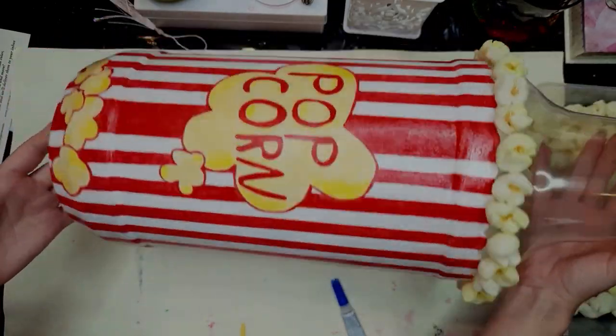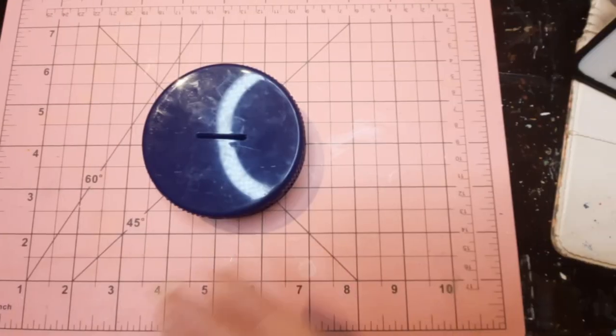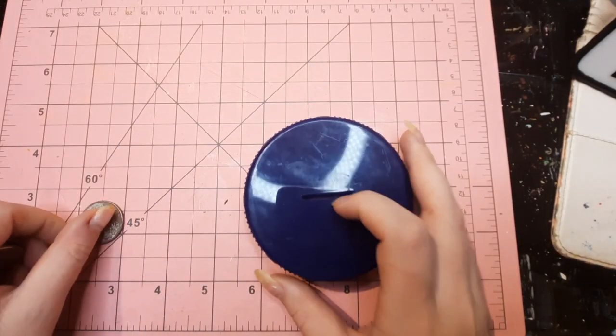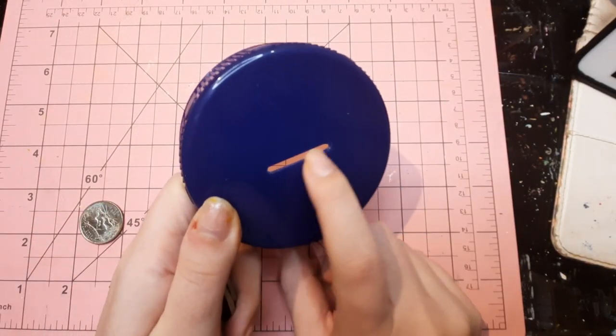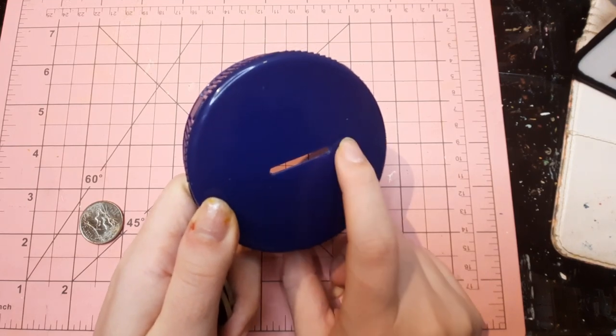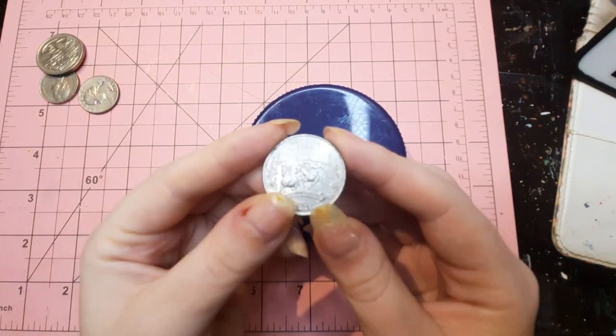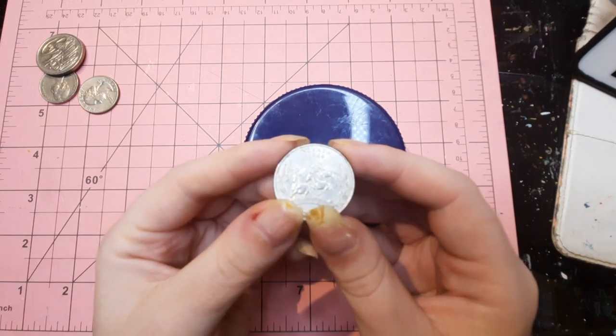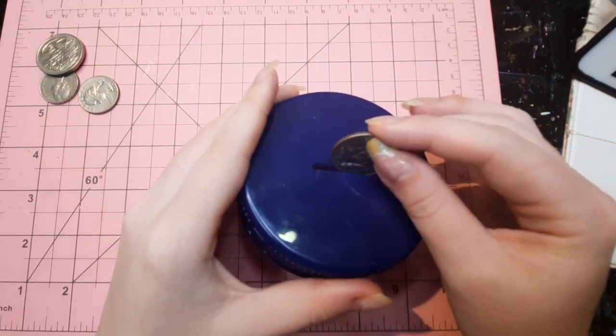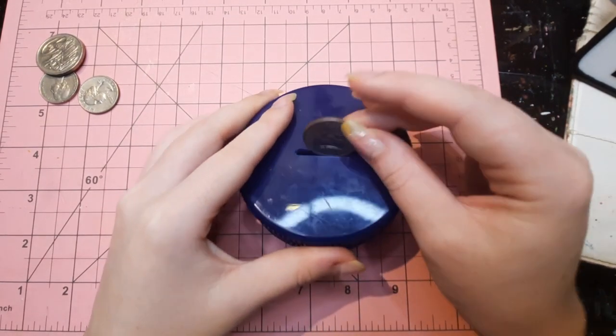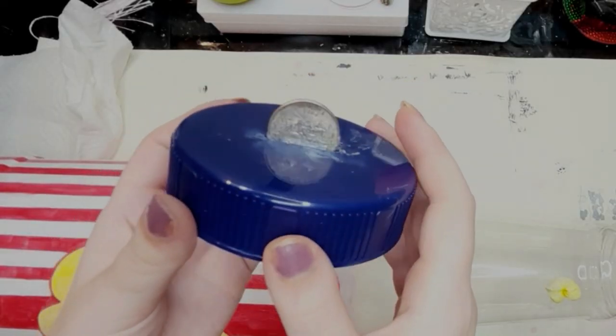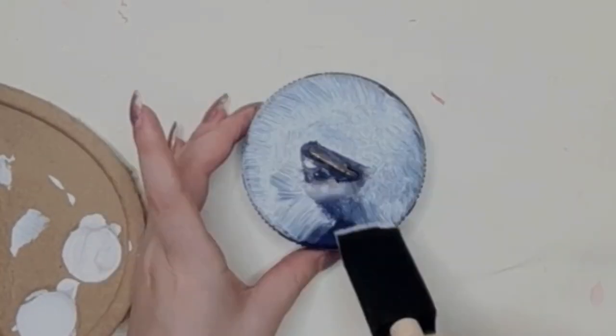Moving on to the lid, this lid had a coin slot but it was closed, so I just created a slit using my exacto knife. I thought it would look really cool if I took a quarter and used my hot glue gun to glue it in the coin slot so it looks like the quarter is falling through it. Here's how it looks with the coin glued in.